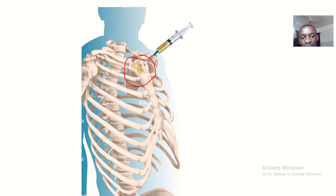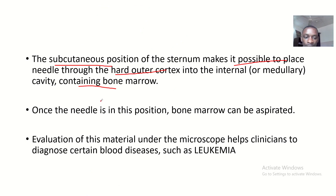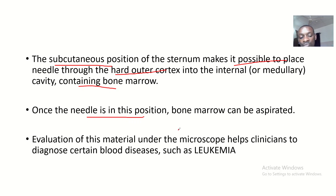Placing the needle through the hard cortex into the internal medullary cavity — containing all the bone marrow — allows the bone marrow to be aspirated. You draw the shoots of your needle and you can see bone marrow in your syringe.